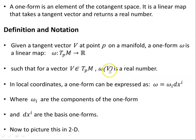So ω, the one-form, takes the vector V and contracts with it to produce a real number. In local coordinates, the one-form can be expressed as ω = ω_i dx^i, where ω_i are the components of the one-form and dx^i are the basis one-forms.